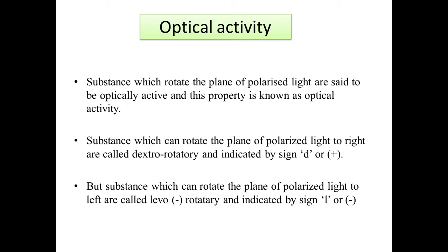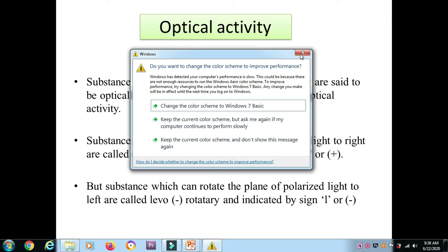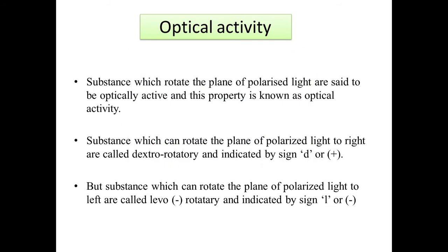What is optical activity? An organic substance that rotates plane-polarized light is said to be optically active, and this property is known as optical activity. A substance that rotates plane-polarized light to the right is called dextrorotatory, indicated by the sign (+) or d. A substance that rotates plane-polarized light to the left is called levorotatory, indicated by the sign (−) or l.